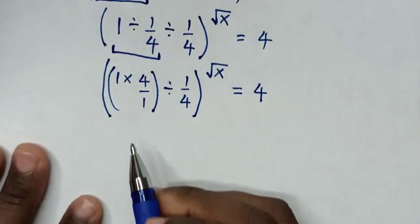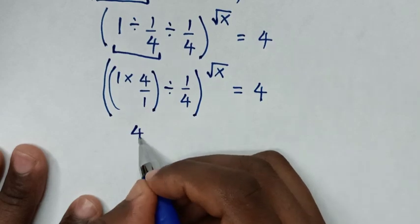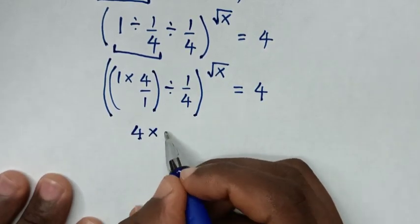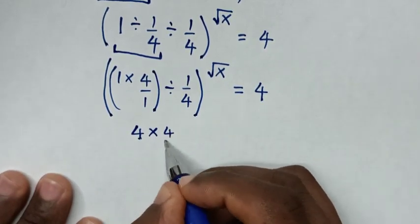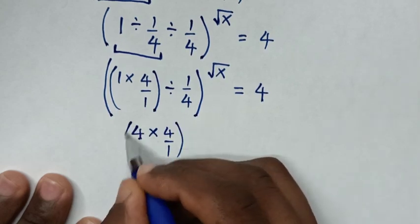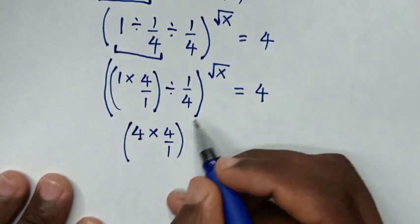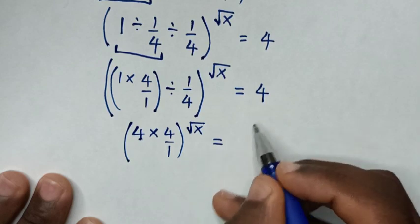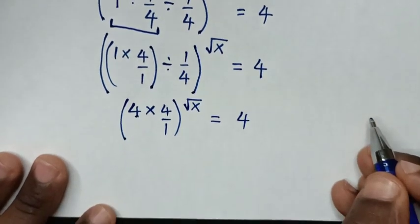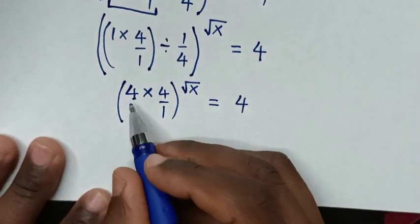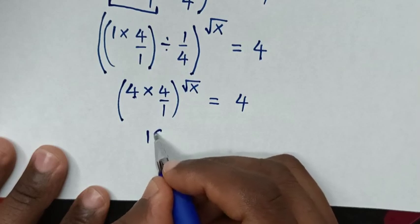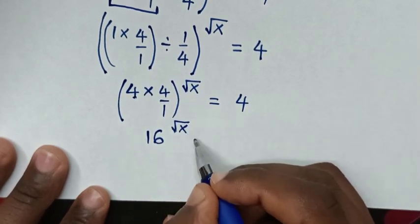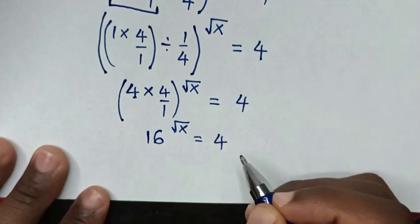Then 1 times 4 is 4. Divided by 1 over 4 is the same as times 4 over 1. So the power of square root of x equals 4. In the next step 4 times 4 is 16, giving us 16 to the power of square root of x is equal to 4.